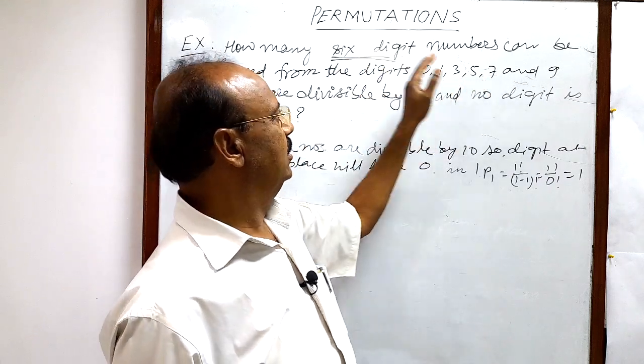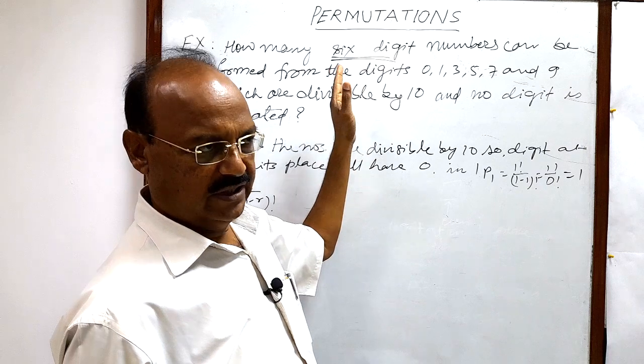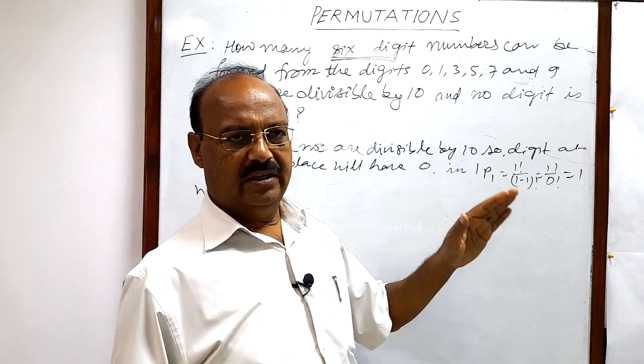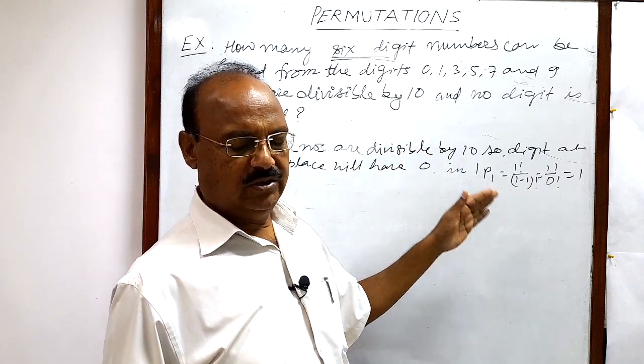Now we have to select digits for the remaining five places: tens place, hundreds place, thousands place, ten thousands place, etc.